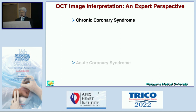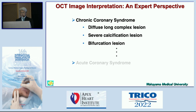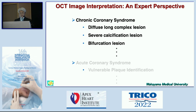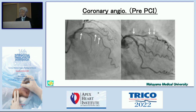This is my disclosure slide. There are some topics about OCT imaging at the moment, but because of time limitation, I would like to focus on chronic coronary syndrome — especially diffuse long complex lesions, severe calcification, and bifurcation. If I have enough time, I'll just touch on acute coronary syndrome. So let's start with the long diffuse region.